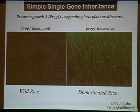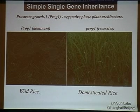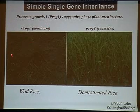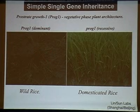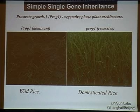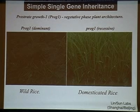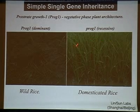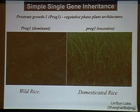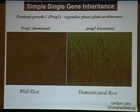In rice, there's another example of simple single-gene inherited trait. Wild rice has two phases of growth: an early phase where it spreads along the ground, then later grows erect. Domesticated rice grows erect from the very beginning, which has nice advantages for dense planting and harvesting. This is controlled by a single gene.